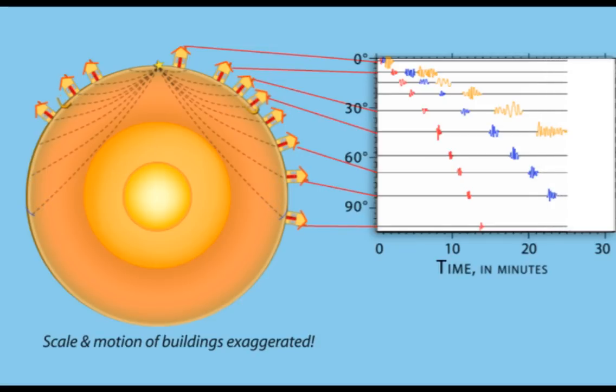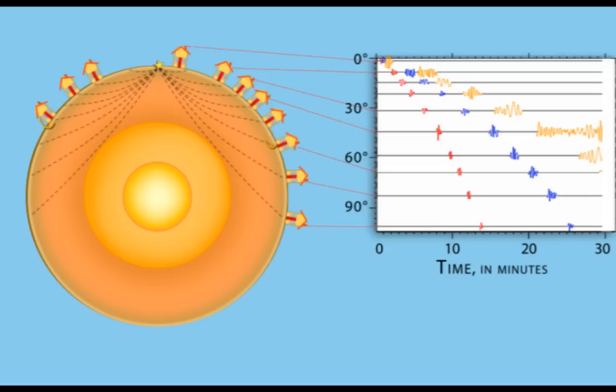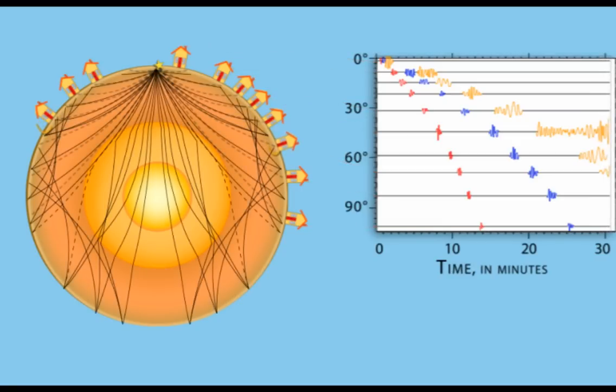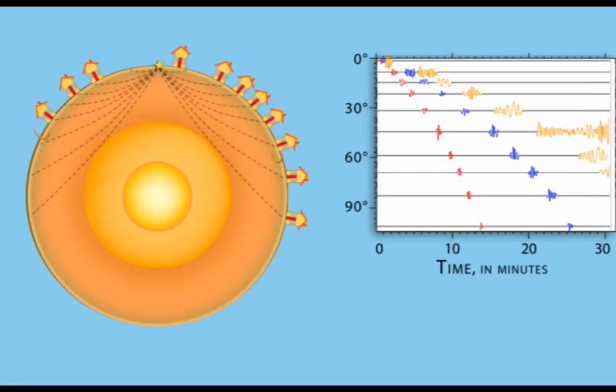Here we show only direct P and S wave paths through the mantle and crust. The final image of this animation will show more of the complexity within the Earth as the waves are reflected, refracted, and damped due to changes at depth.